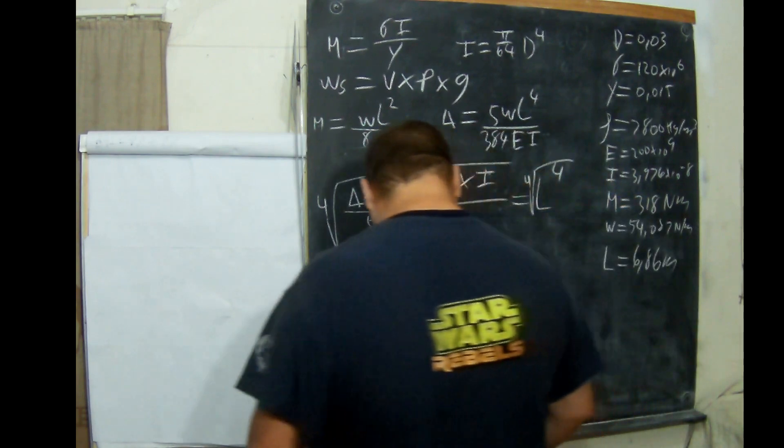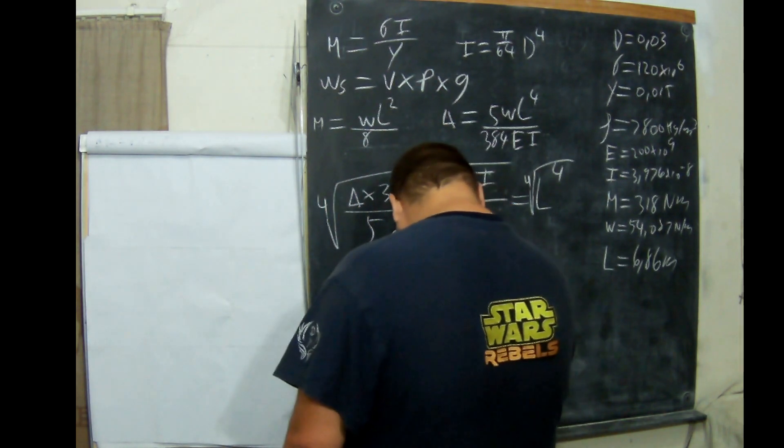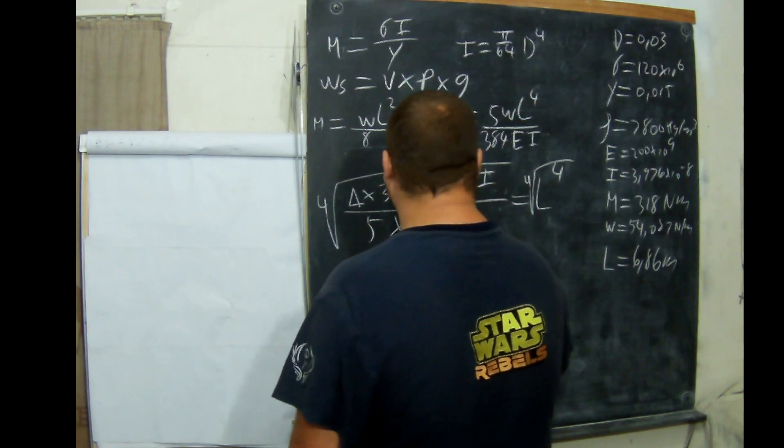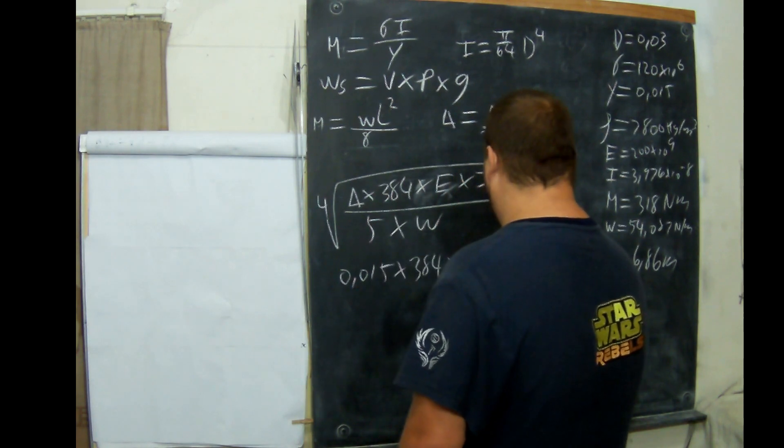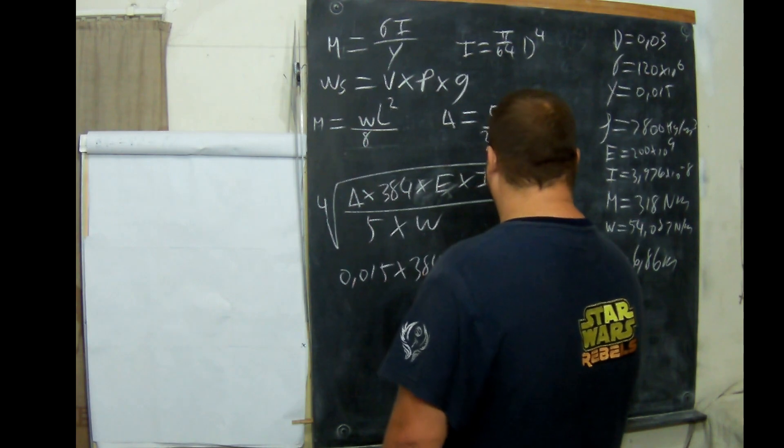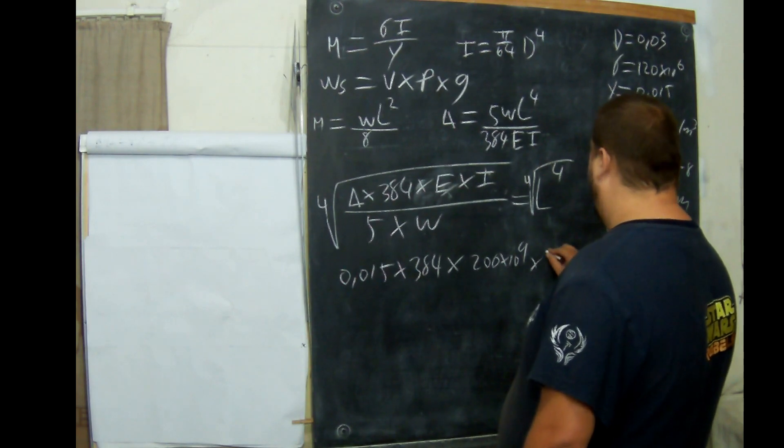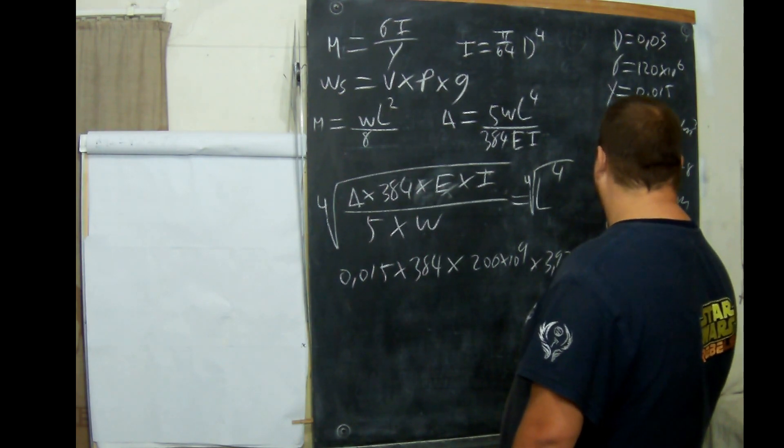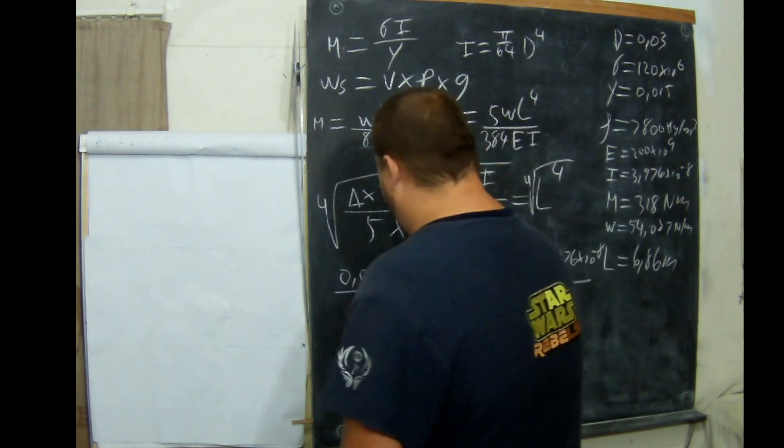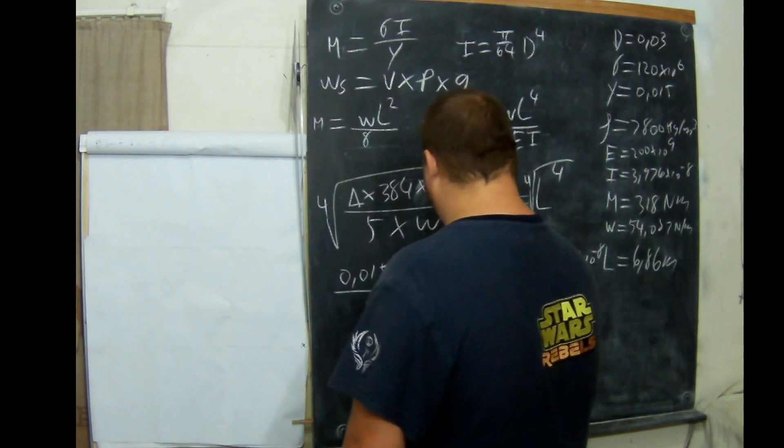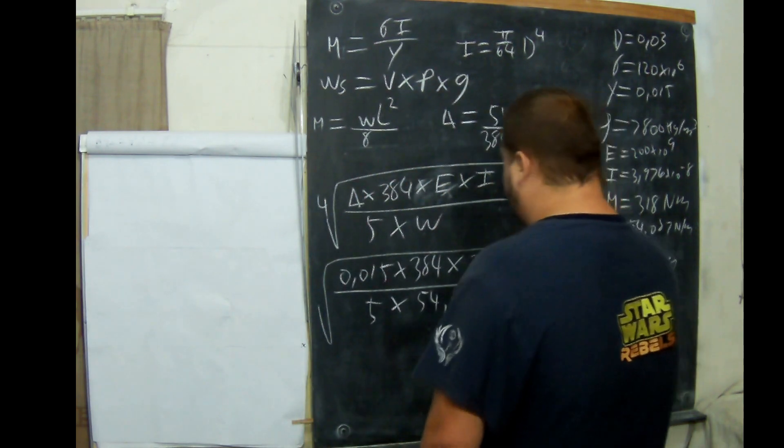What we're going to do is put all the values in. So 0.015 times 384 times 200 times 10 to the 9 times 3.976 times 10 to the minus 8, all over 5 times the weight of 54.087, all rooted to the power of 4.